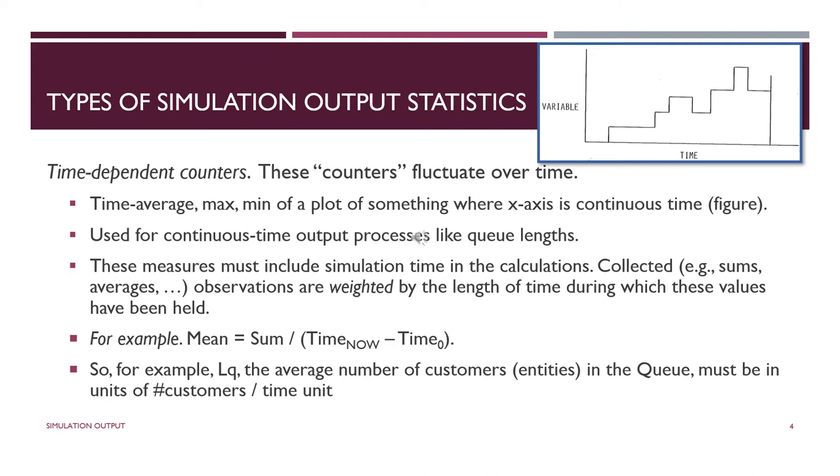Instead of just counting or tallying, we're getting a weighted average and it's weighted by the length of time these values have been held. So in the queue you might have one person waiting in the queue for three minutes, you might have five people waiting in the queue for five minutes. We need a weighted average in order to find out on average how many people are waiting in the queue. Notice the units will help you out, because the units on this average is number of customers per time unit.